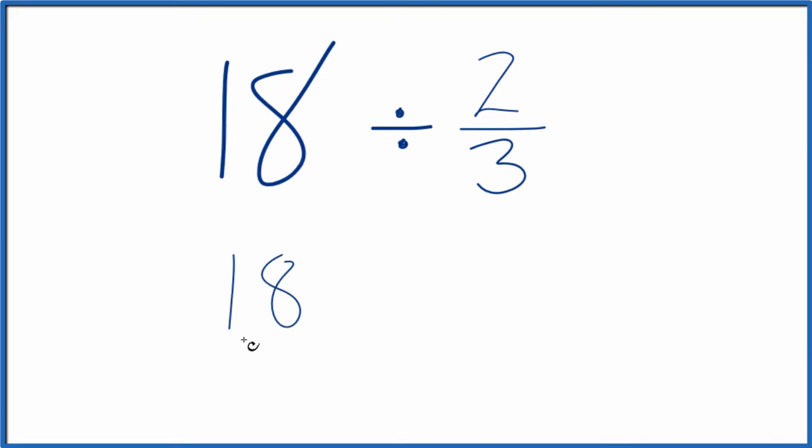First off, we're going to call this 18 over 1. It's still 18 because we're just dividing by 1, but that gives us a fraction, and that's helpful.